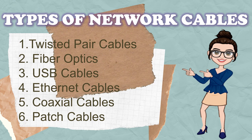These cables are essentially the carrier through which data flows. There are different types of network cables, and these are the following: Twisted Pair Cables, Fiber Optic Cables, USB Cables, Ethernet Cables, Coaxial Cables, and Patch Cables.